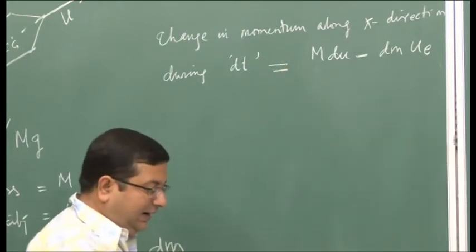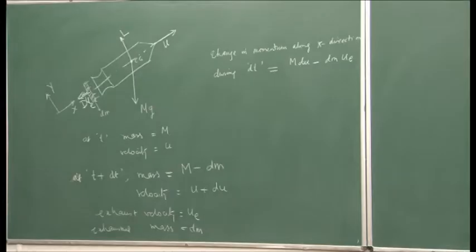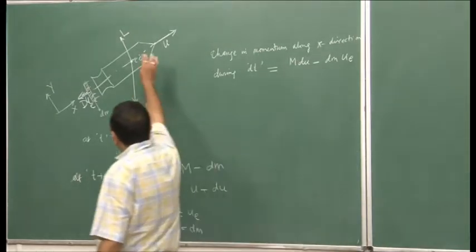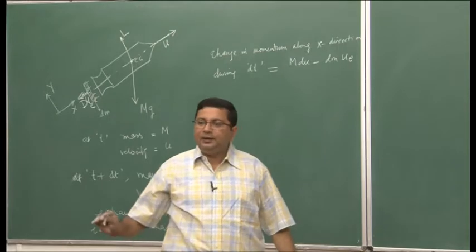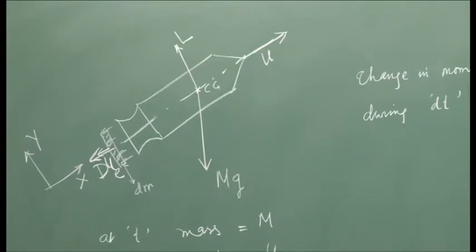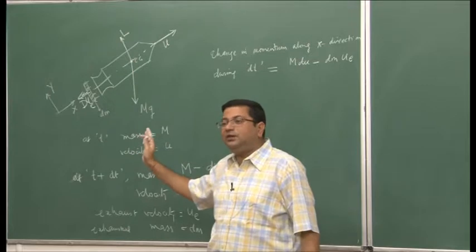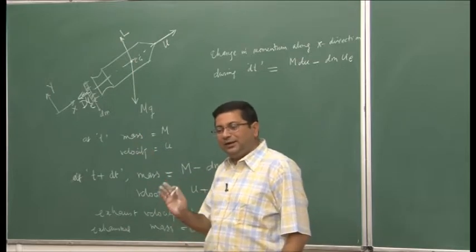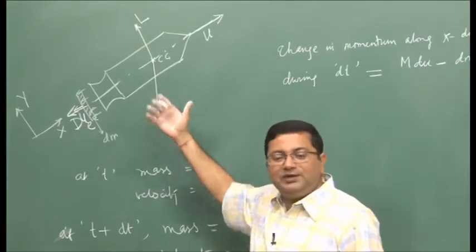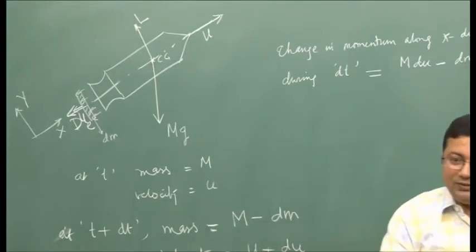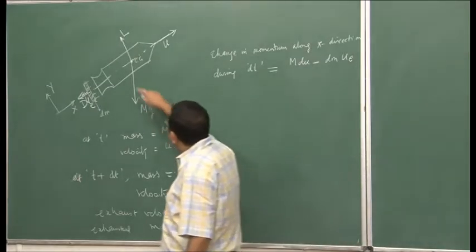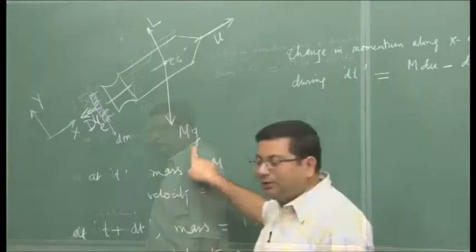This is the expression derived in the last class: the change in momentum is m·du minus dm·u_e, where m is the mass of the vehicle at time t, du is the increment in vehicle velocity during dt, dm is the mass exhausted during this small interval, and u_e is the exhaust velocity. Now, since we are considering the exhaust separately, we do not consider thrust as a separate force. The forces acting on the vehicle are only three: lift, drag, and weight.